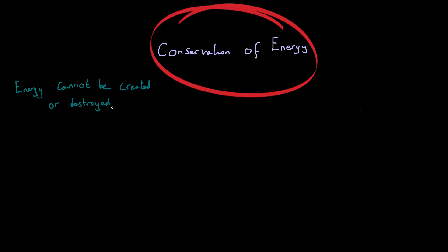Energy cannot be created or destroyed. What this means in real terms is that we cannot just snap our fingers and produce energy out of nothing. There is a finite amount of energy in the universe and all we can do is convert energy from one form to another. For example, if you had 5 joules of chemical energy, you can't turn that into 10 joules of energy. Energy can only be converted.